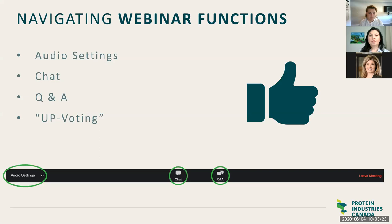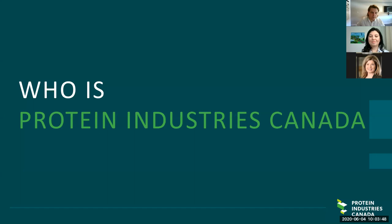There is an upvoting feature — a thumbs up — that you will see when people are asking questions within the Q&A. This will help put questions to the top of the list and help us curate the most important questions to answer. If you notice somebody has asked a question you'd also like answered, select that thumbs up and we will get to those questions at the end. Without further ado, I'd like to pass it over to Camilla for a brief overview of who is Protein Industries Canada.